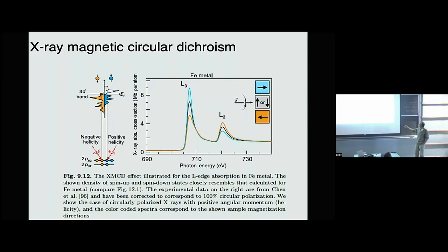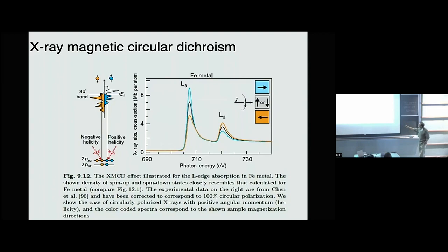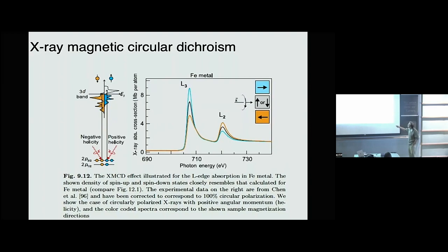This shows what the experimental data look like for iron — the x-ray absorption cross section for helicity parallel or anti-parallel to the magnetization vector, which you can modulate with an external field. You'll see that at the L3 edge, if you go from right circular to left circular polarization, the absorption drops very substantially — you almost lose half the cross section. On the other hand, at the L2 edge where you have only two states, you actually increase the absorption cross section. What's in between is linearly polarized light, which forms the average of the two — that's the black curve.